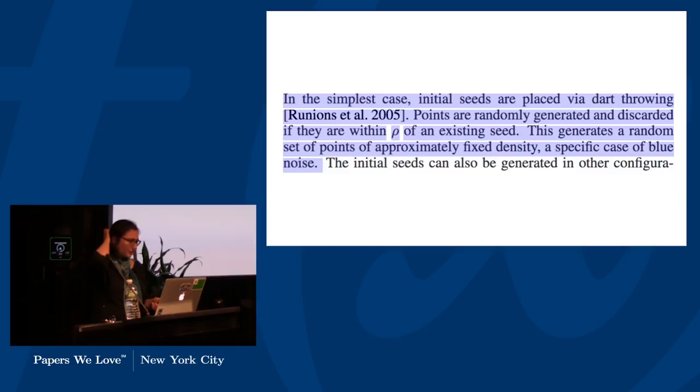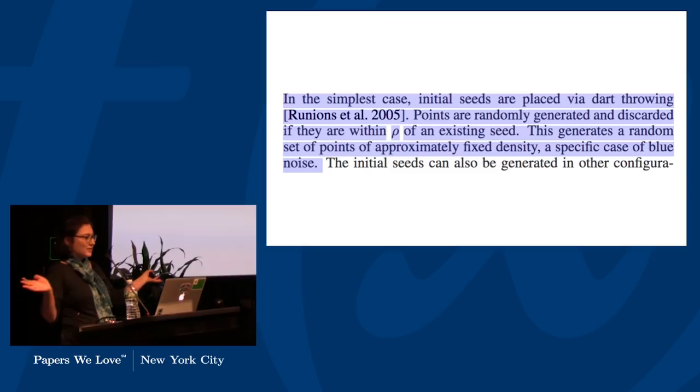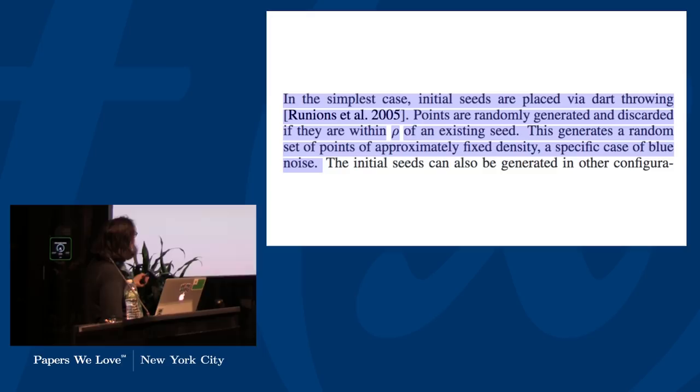The authors devote very little actual time in the paper to this, which I think is really interesting, because this drives the majority of the aesthetics of the puzzle. There's two bits to that. One is how do you place your seeds. They call this dart throwing, which is a really fancy way of saying, yeah, we generated some blue noise. So they randomly generate a point. If that point is not more than this distance from an existing seed, they keep it. And they keep going until they have the number of puzzle pieces that they wanted. They make a brief note that you can generate them in other ways, but they don't really show you the different ways that that impacts your puzzle.